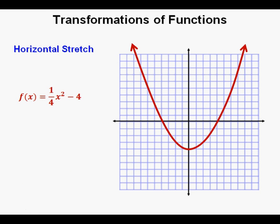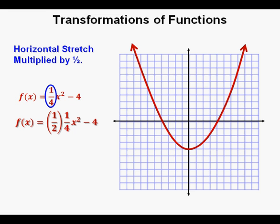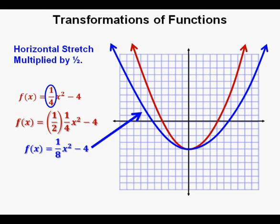Now we're going back to the function we started with: f of x equals 1 fourth x squared minus 4. We're going to do a horizontal stretch. For a horizontal stretch, we deal with the leading coefficient of our quadratic term — 1 fourth — and multiply it by a number less than 1. Multiplying 1 fourth by 1 half gives f of x equals 1 eighth x squared minus 4. We see in blue the graph of that horizontally stretched function.